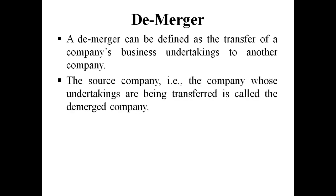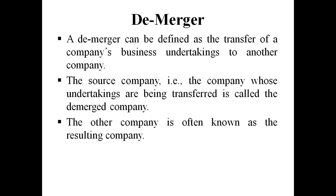The source company — the company whose undertaking is being transferred — is called the de-merged company. For example X and Y: if X transfers its undertaking to Y company, then X company is the source company, called the de-merged company. The other company Y is known as the resulting company — it will work on that particular undertaking received through de-merger and generate results for the other company.